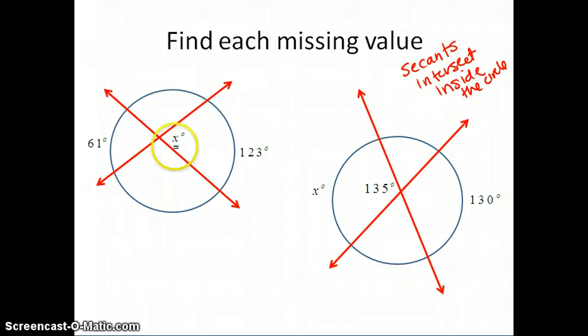That's important because it has a specific property. The property when a secant intersects inside the circle is sort of like an average property. If I'm going to solve this first problem, I want to find the measure of angle x. I can't just do half of 123 because it's not an inscribed angle, and I couldn't do half of 61 because it's not an inscribed angle. Instead, I'm going to sum them together. Sum means add. And then I'm going to take half of that sum. So 61 plus 123, add those together and take their sum.